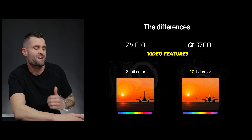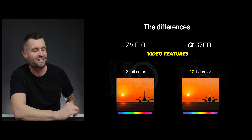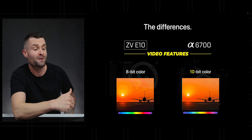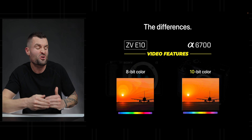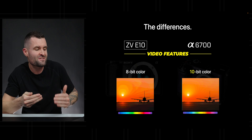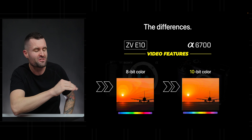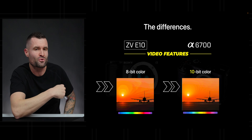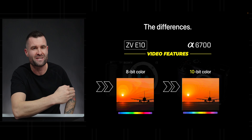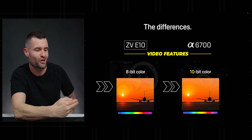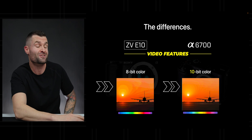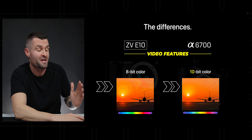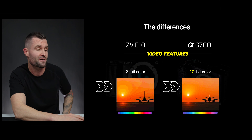The ZV-E10 is recording in 8-bit color and the A6700 bumps that up to 10-bit color. If you look at the sun, you can see the gradient is a lot more smooth with 10-bit color. It's a huge upgrade — a big one that I noticed after using 8-bit cameras and bumping up to 10-bit.